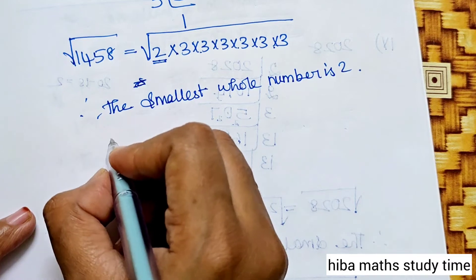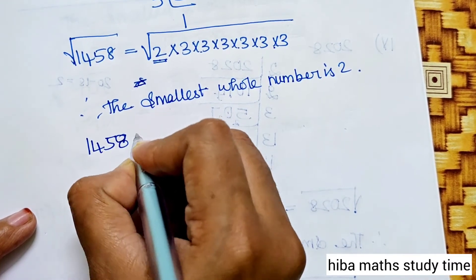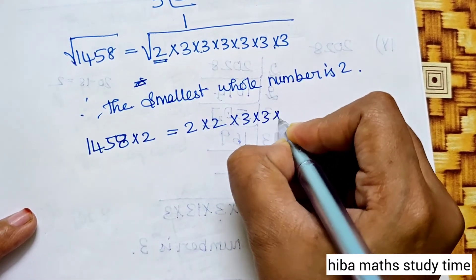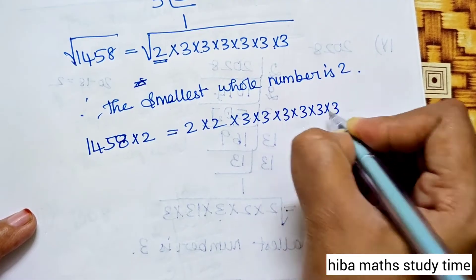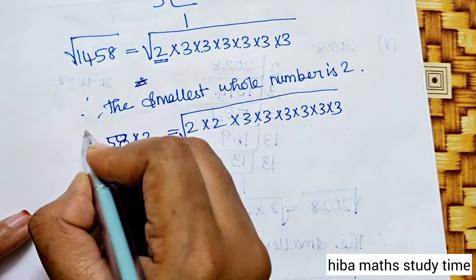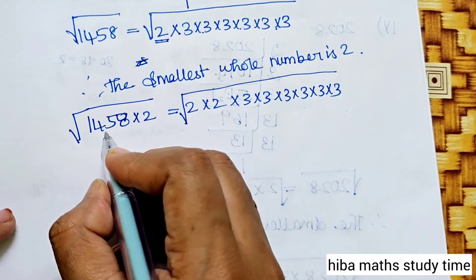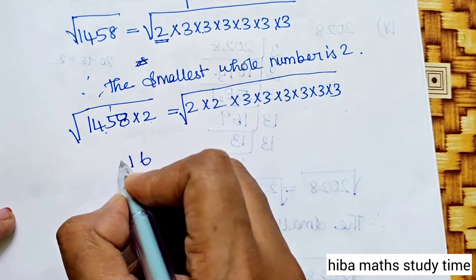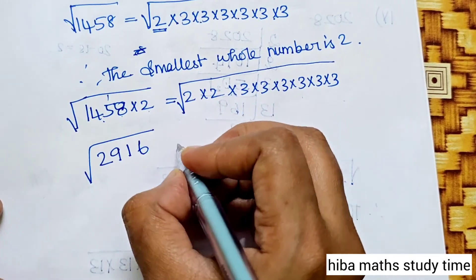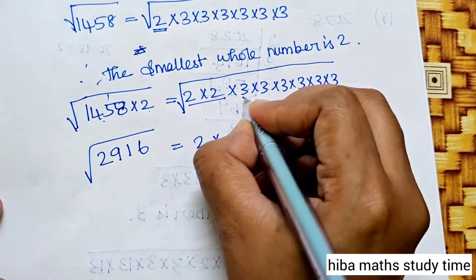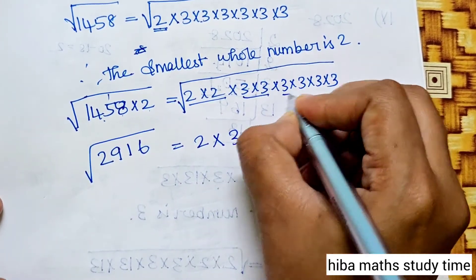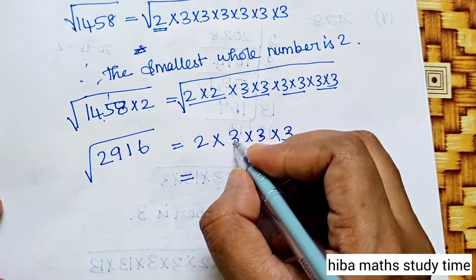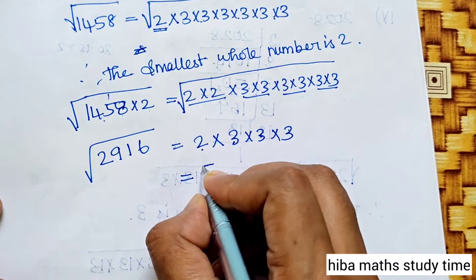We multiply 1458 by 2. So 1458 × 2 = 2916. The factorization becomes 2 × 2 × 3 × 3 × 3 × 3 × 3 × 3 — all in pairs. So √2916 = 27 × 2 = 54.